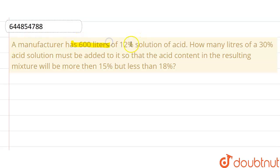600 liters of 12% solution of acid. How many liters of 30% acid must be added to it so that the acid content in the resulting mixture will be more than 15% but less than 18%?